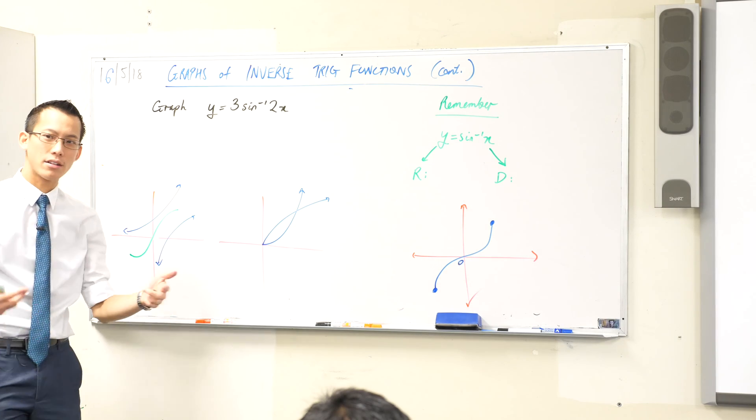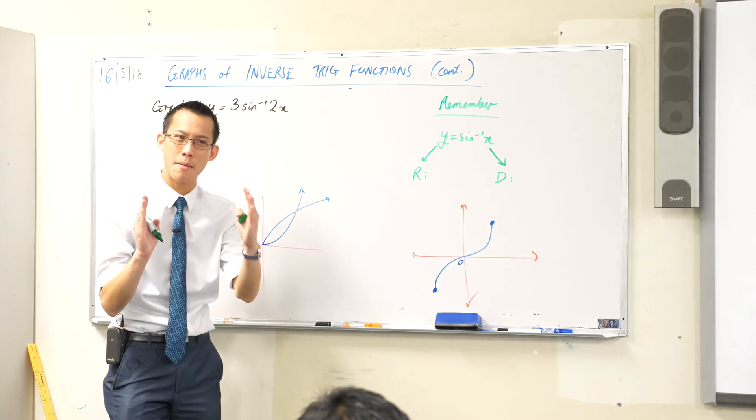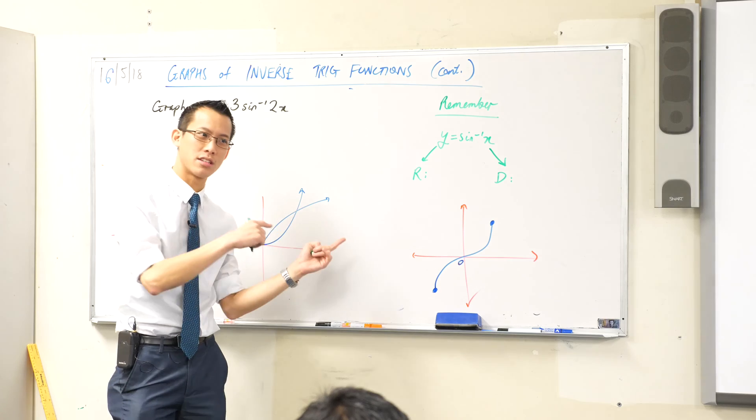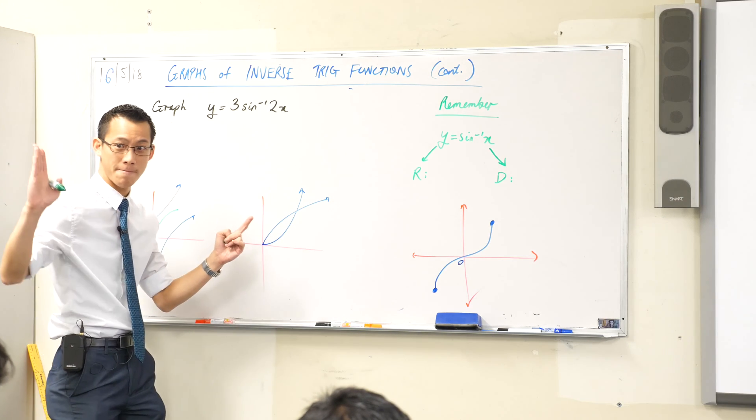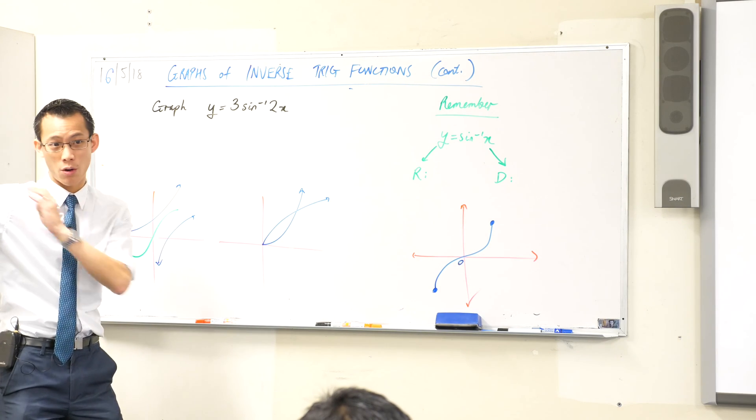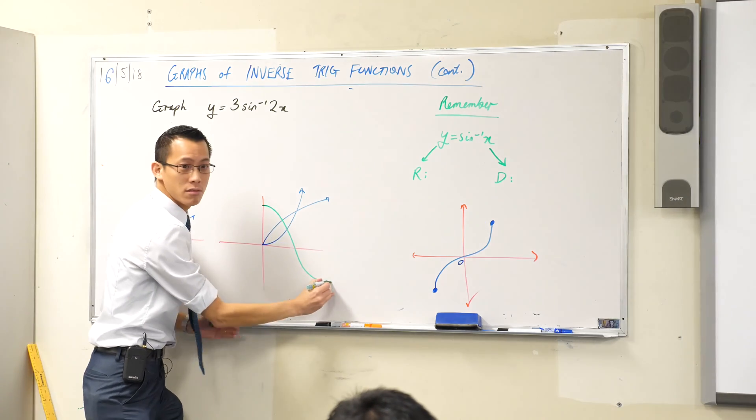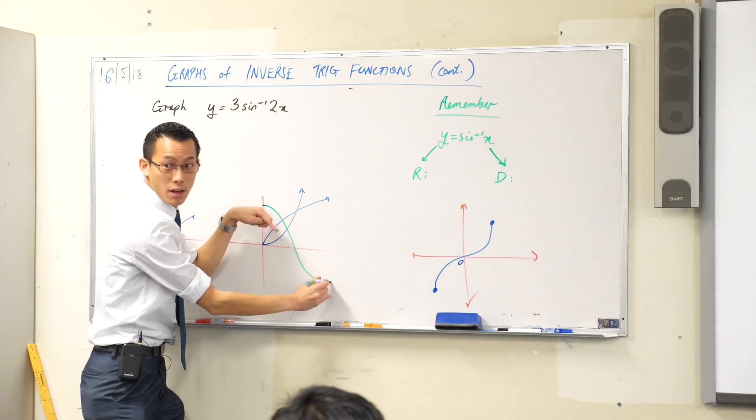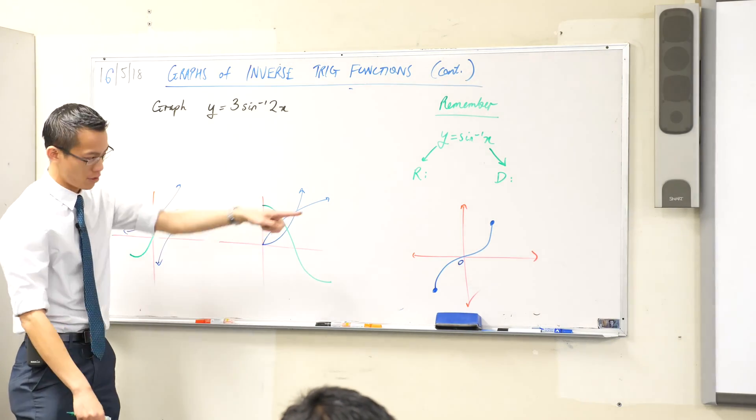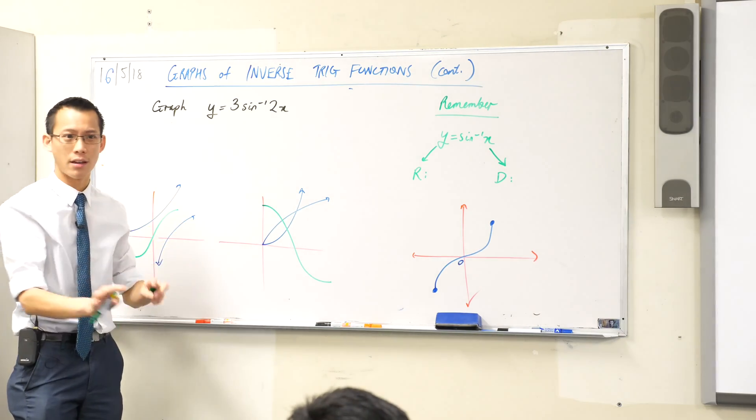And the reverse is also true. What about cos? Which part of the domain do we take to turn into cos inverse? Where do we start? We start at 0, and then we go all the way to pi. And in that domain, cos is decreasing. You see that? It's gone down. Which is why its inverse is decreasing. Is that okay?